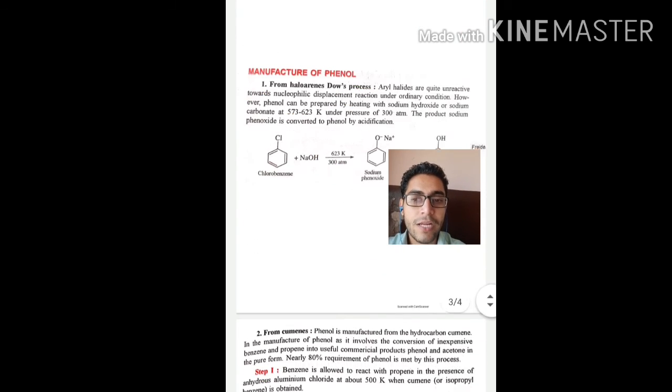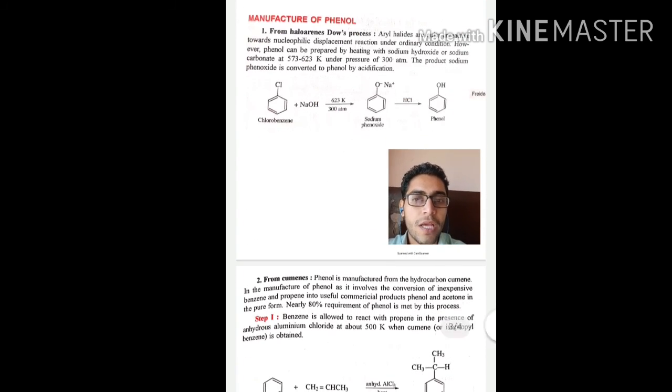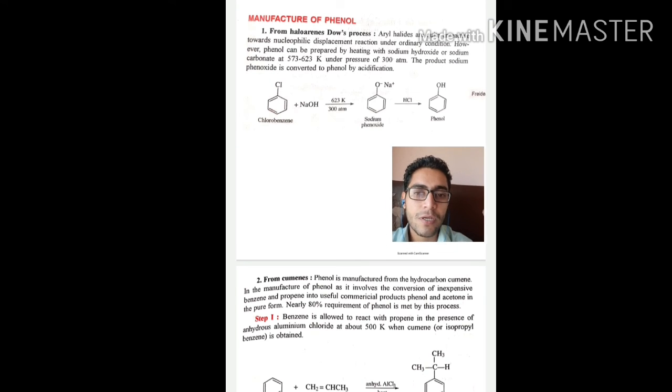Next is manufacture of phenol from halo arenes. Aryl halides are quite unreactive towards nucleophilic displacement reaction under ordinary conditions. But when chlorobenzene is heated with sodium hydroxide or carbonate at temperature 573 to 623 Kelvin at 300 atmospheric pressure, the product we get is sodium phenoxide...